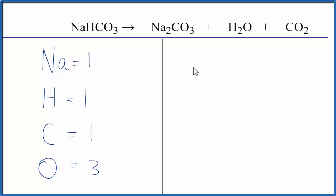On the product side we have two sodiums, two hydrogens, one carbon plus this carbon over here, so that gives us two of those. Oxygens we have three plus one plus two, so we have six oxygens.